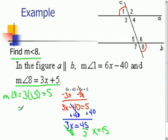So multiplying that out, simplifying, 3 times 15 is 45 plus 5. 45 plus 5 is 50 degrees. So the measure of angle 8 is 50 degrees.